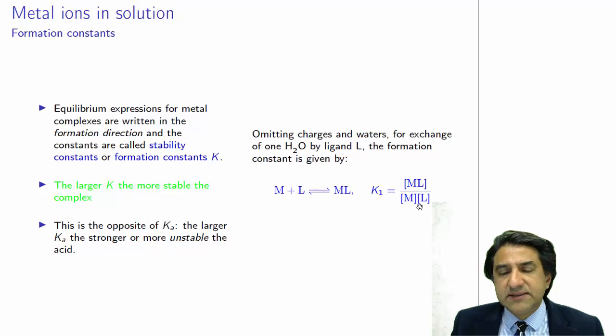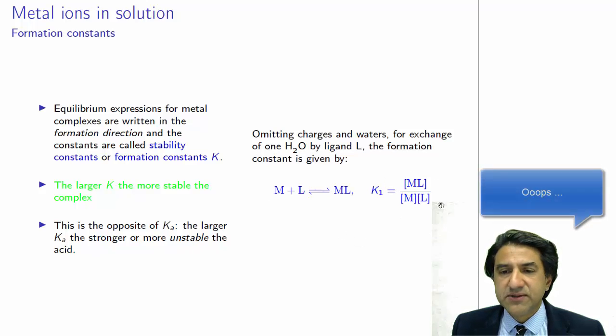Normally, we would write this kind of a reaction for an acid in the reverse way. So we would have HA dissociating to H plus and A minus. So this is the opposite of a Ka constant, which basically says for Ka, the larger the Ka, the stronger or more unstable the acid. But here, the larger the formation constant...